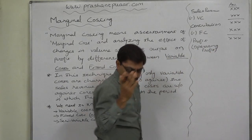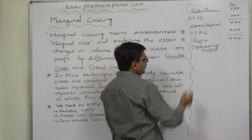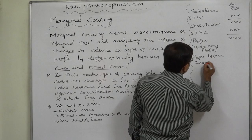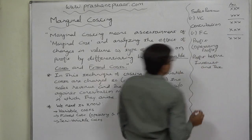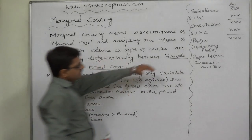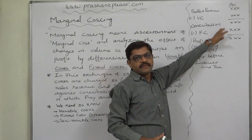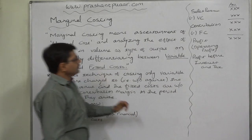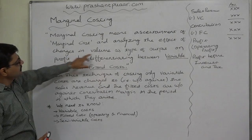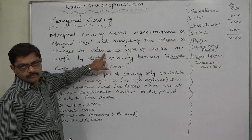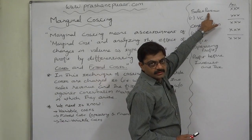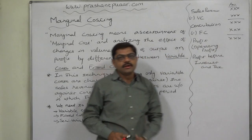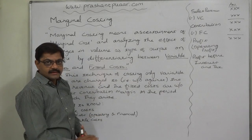This profit, precisely according to accounting terms, is the profit before interest and tax — because in marginal costing, fixed cost means only operating fixed cost. Now, analyzing the effect of changes in volume or type of output: if we change the volume of output, our sales revenue will change accordingly, the variable cost will change accordingly, the contribution will change, and accordingly the profit will change — because in the short term, the fixed cost remains fixed or constant. Thank you.